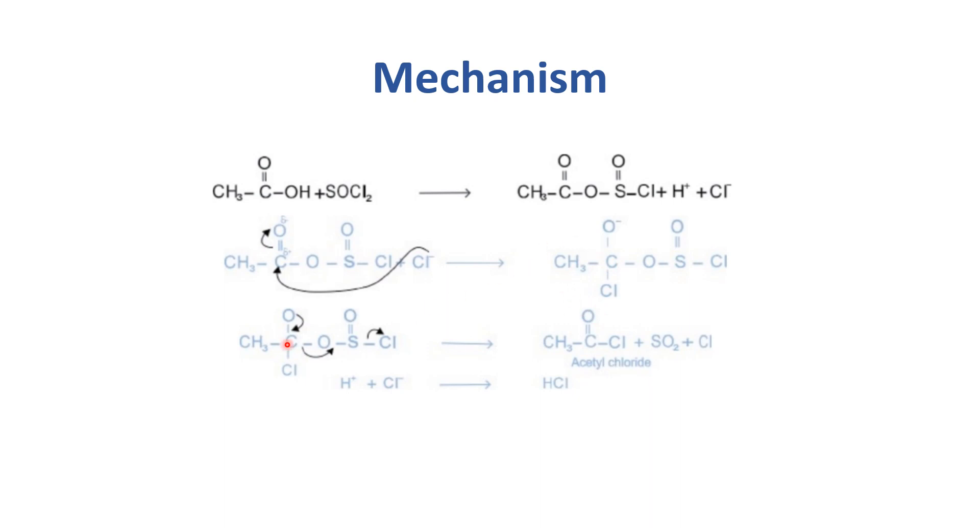In the very next step, the bonds rearrange. The negative charge is here, and this way we get acetyl chloride plus SO2 plus Cl. This bond is here and this double bond is here, giving acetyl chloride.